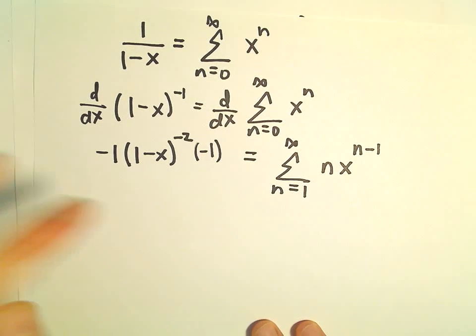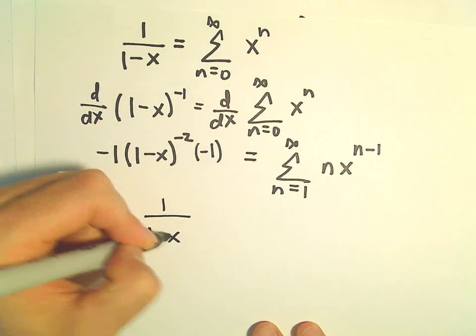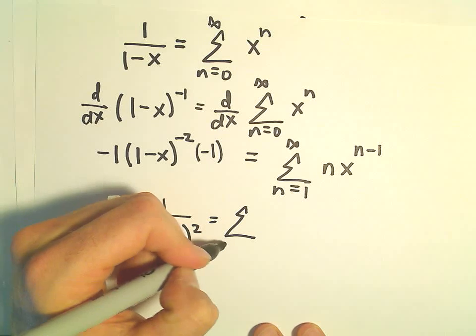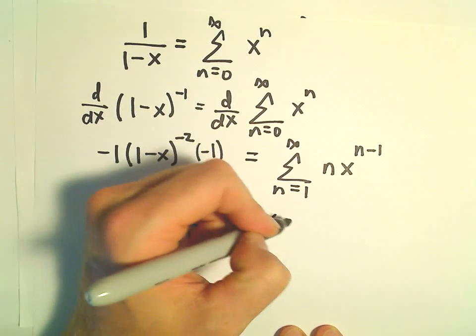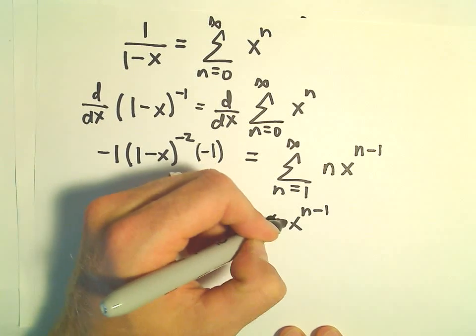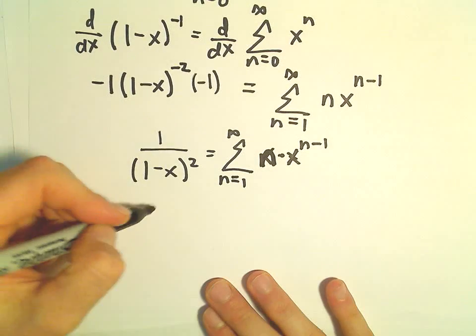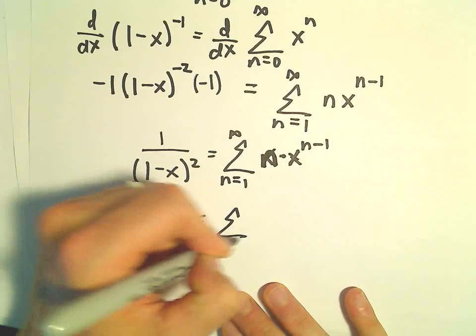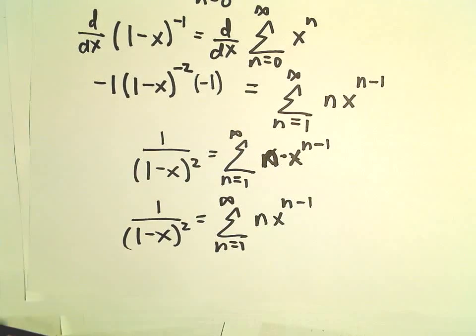Okay, so we can rewrite the left side. The two negatives will cancel, so we'll have 1 over 1 minus x to the positive second power. And again, that's equal to n times x to the n minus 1. I said n times x to the n minus 1, but I wrote too many x's. Let's write this one more time: 1 over 1 minus x squared equals n times x to the n minus 1.